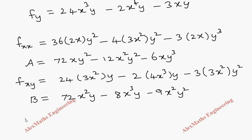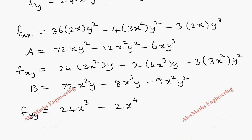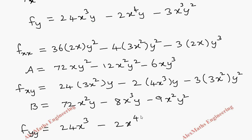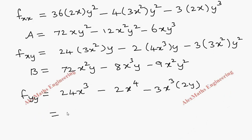For fyy, we differentiate fy = 24x³y - 2x⁴y - 3x³y² with respect to y: 24x³ · 1 - 2x⁴ · 1 - 3x³ · 2y. Rearranging: fyy = 24x³ - 2x⁴ - 6x³y. This is our value c. We now have expressions for a, b, and c.